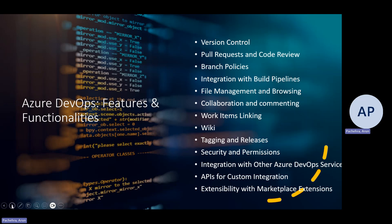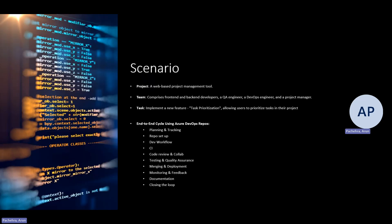Now let's go ahead and take a realistic scenario and put all these features and functions into a story. The scenario is a web-based project management tool, and the team comprises front-end and back-end developers, a QA engineer, a DevOps engineer, and a project manager. We're going to implement a new feature: task prioritization — allowing users to prioritize tasks in their project. Let's go through the end-to-end cycle using Repos.